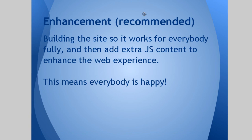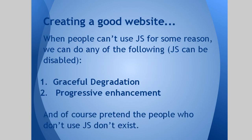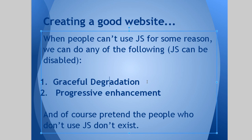Progressive enhancement is building the website from scratch to where it works for everybody. Once you have a complete website that works for everybody, you add the extra content that just enhances the web experience — but it doesn't define the web experience. You do that first, and then you add the JavaScript in. This means everybody is happy. In review, there are two main methods: graceful degradation — building the website and then working your way back for people who don't have all the features — and progressive enhancement, where you build a website everyone can use and then add extra content to enhance it for people who have JavaScript.